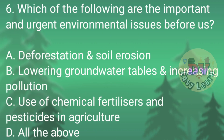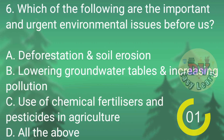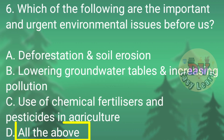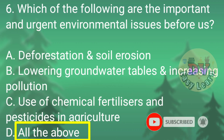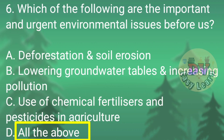Question No. 6: Which of the following are the important and urgent environmental issues before us? Correct answer: All the above. Options include: Deforestation and soil erosion; Lowering groundwater tables and increasing pollution; Use of chemical fertilizers and pesticides in agriculture.